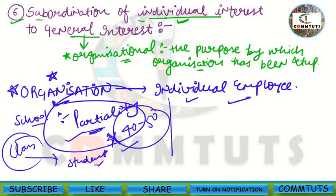Another example: some employees go on strike demanding reduced working hours or higher salaries. These are individual employee demands. If the organization accepts every such demand, it will not survive long. The organization should make decisions for the organization's benefit, not purely for individual benefit.